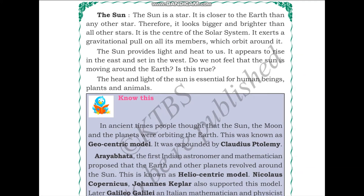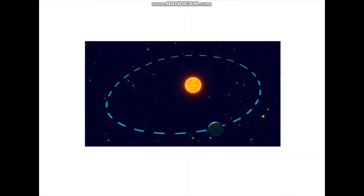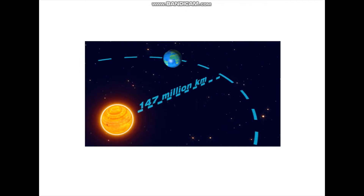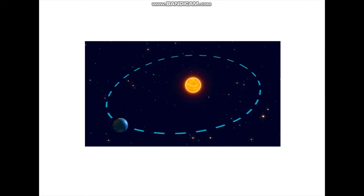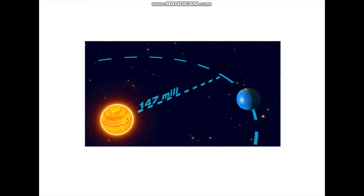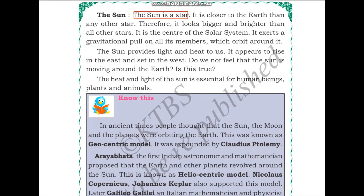The Sun is a star. It is closer to the Earth than any other star, and therefore it looks bigger and brighter than all other stars. I will show you an image of the Earth revolving around the Sun. The Sun is the center of our solar system, and the other planets revolve around the Sun.